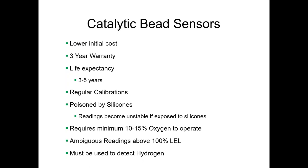Catalytic bead sensors are also poisoned by silicones. If silicones are exposed to the active bead, they deposit a coating that insulates the bead from the environment, poisoning the sensor so it will no longer react to a combustible environment — requiring sensor replacement. Additionally, the catalytic bead sensor requires a minimum of 10–15% oxygen to operate; below that level, oxidation of the active bead won't take place at all. And if it sees above 100% LEL, readings become inaccurate and untrustworthy.